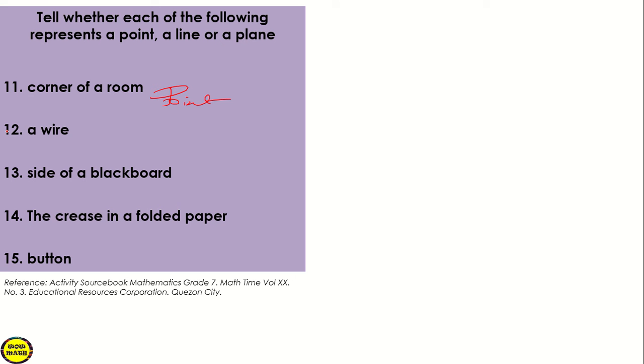How about a wire? This is line. Side of a blackboard, line also. Blackboard is a plane, pero kung side, so this is a line. The crease of a folded paper, this is an example of a line.